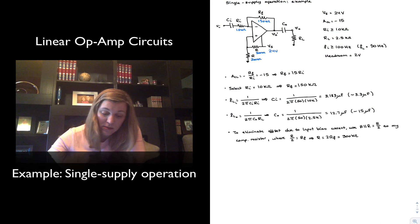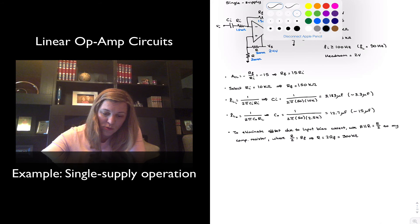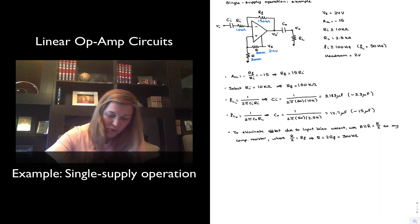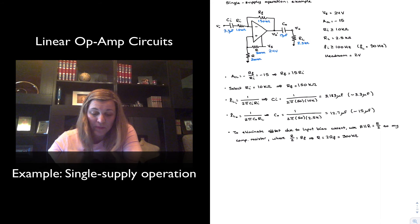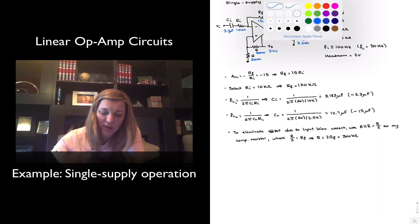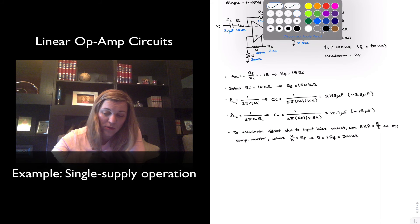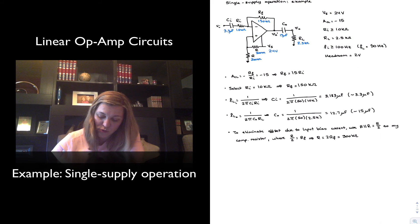So the design is pretty much complete. I just need to add the values of my capacitors here. So this was 3.3 μF. C out was 15 μF. I didn't write it earlier, but it's 2.5 kΩ as we are told. And that's about it. We were also given the headroom specification, or we were told that the headroom is 2 volts.